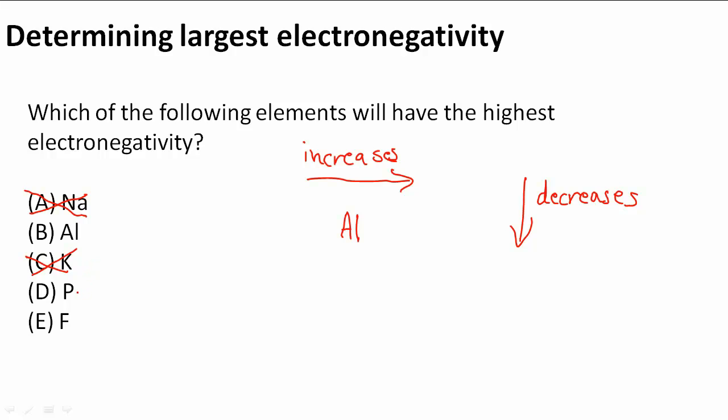And P. We have P, which is even further to the right than Al. We know that when we go from left to right, it's also increasing. So Al is now out of the running and P, or phosphorus, is still in the running.